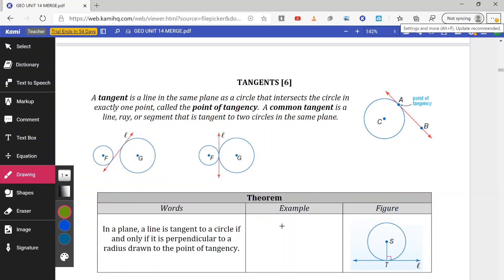Now in trig, tangent was a trigonometric ratio pertaining to a right triangle. Tangent is equal to the opposite side over the adjacent side of a given angle. When it comes to circles, what a tangent is, it's a line that basically intersects the circle at exactly one point, known as point of tangency.